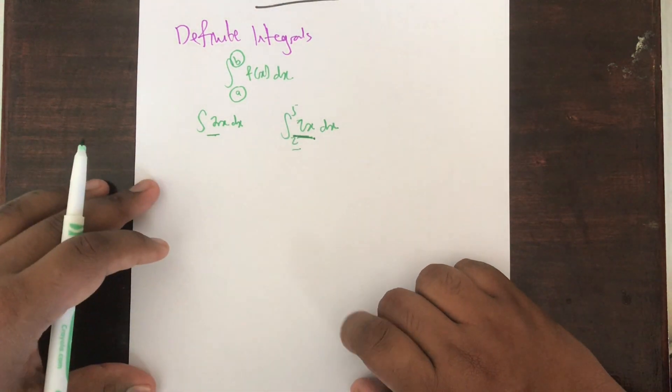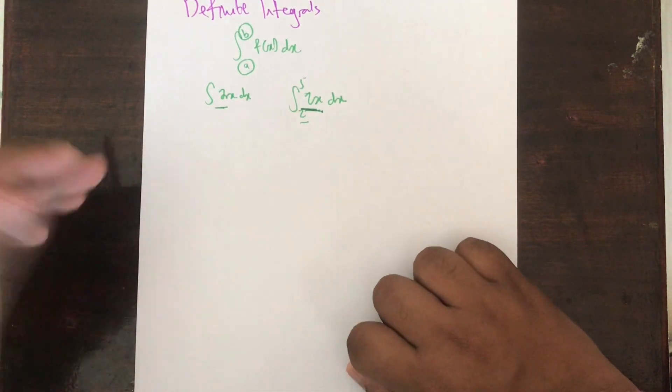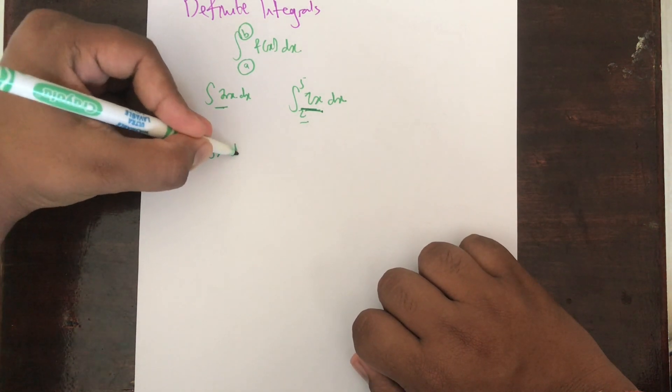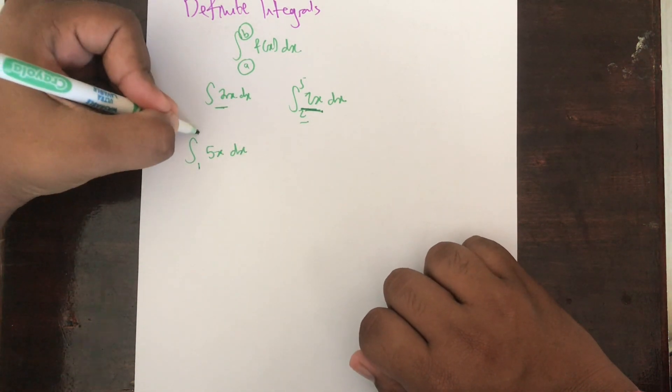Let's see what we're talking about over here. Assume that we are supposed to integrate say 5x and your limits are 1 and 2.